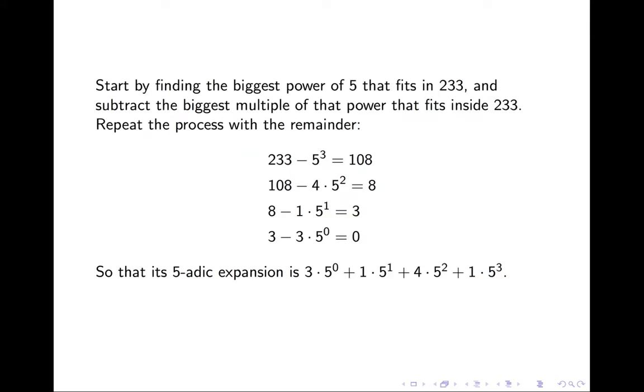We first start by finding the biggest power of 5 that fits inside 233 and subtract the biggest multiple of that power that fits inside it. We then repeat the process with our remainder.